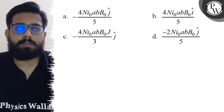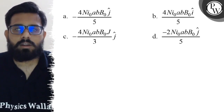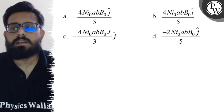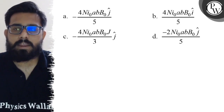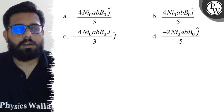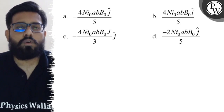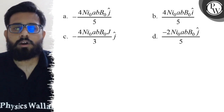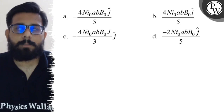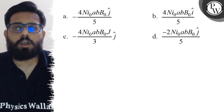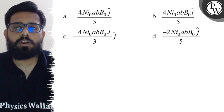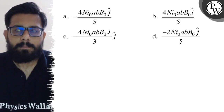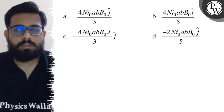Your first option is minus 4n·i0·a·b·B0 j-cap upon 5. Second option says 4n·i0·a·b·B0 upon 5 i-cap. Third option says minus 4n·i0·a·b·B0 upon 3 j-cap. And your fourth option says minus 2n·i0·a·b·B0 upon 5 j-cap.